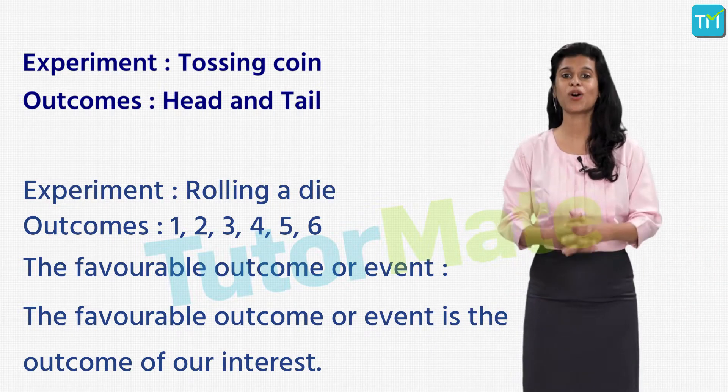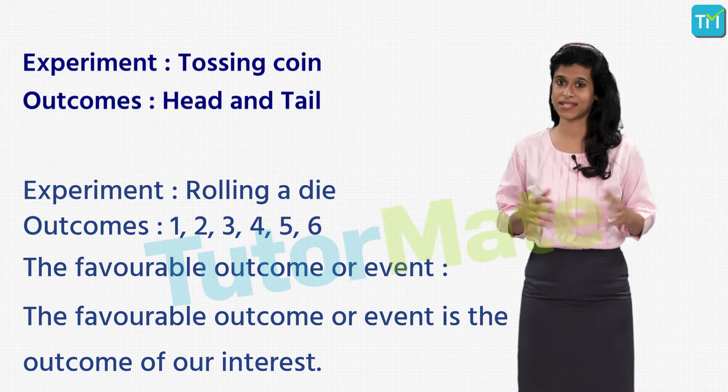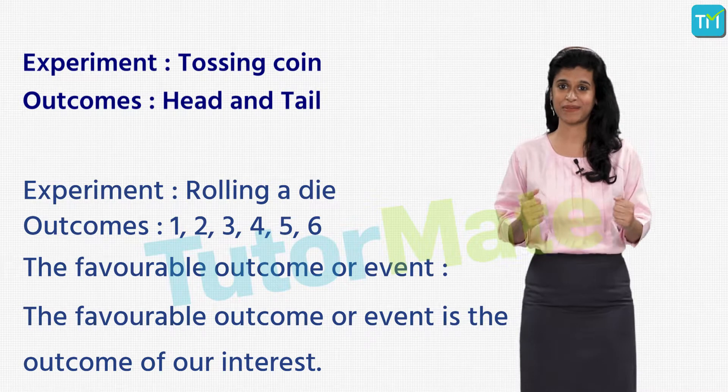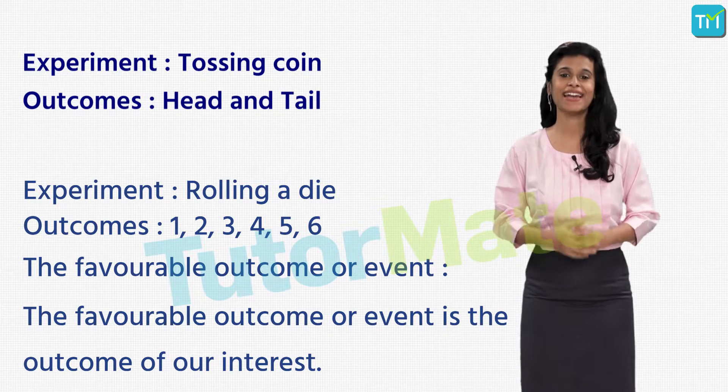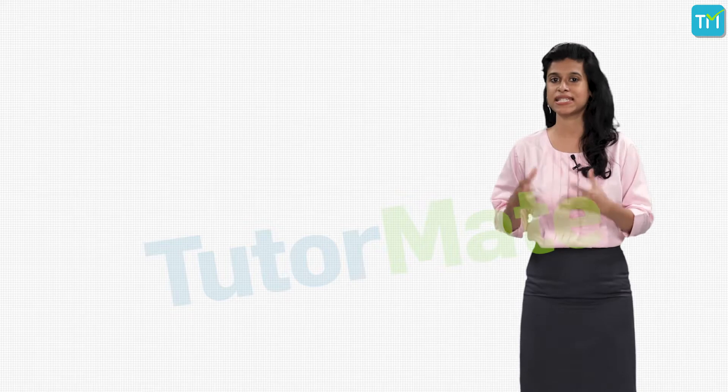So when you toss the coin, you're hoping that the coin shows a head when it falls. You want this experiment to have that outcome, and so we say that the favorable outcome or event in this case is getting a head.